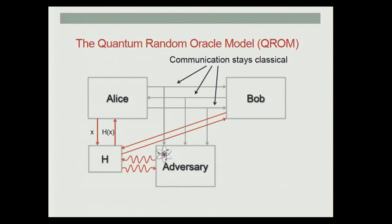Further, we have this random oracle H. Alice and Bob, being classical, can only interact with H in a classical way — sending a query and receiving the output in return — but the adversary, being quantum, we allow to interact with H in a quantum way.